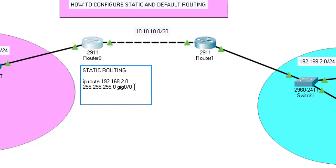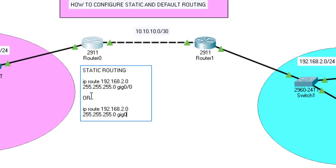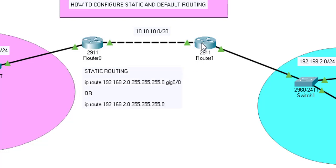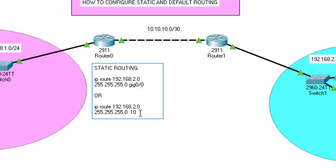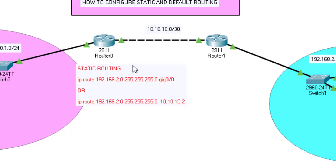For the second method, you specify the IP address of the next hop interface. Let me go to that interface and check — it was 10.10.10.2. So you type 10.10.10.2. By these simple commands, we have configured static routing in router 0. We can do the same on router 1.